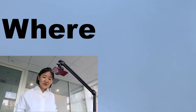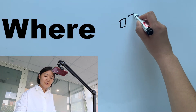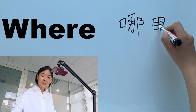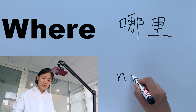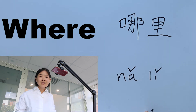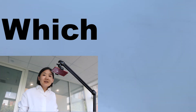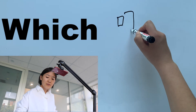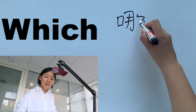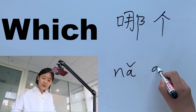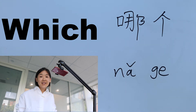Next is 'where' — 哪里 (nǎ lǐ). 你来自哪里? And then 'which' — 哪个 (nǎ ge)? 你来自哪个国家?